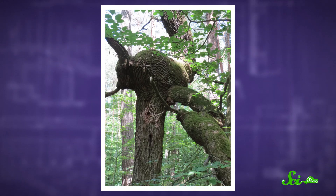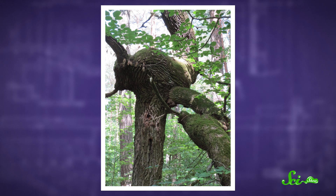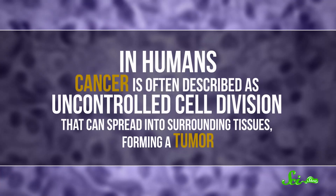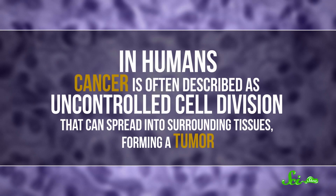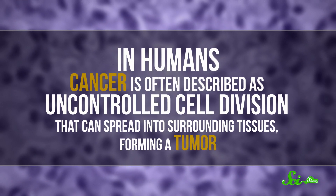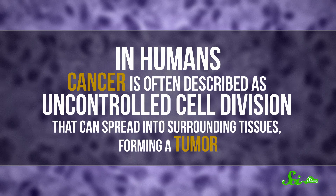You wouldn't expect to come across a plant with strep throat or pneumonia, but have you ever seen a tree with a big twisted knot growing out of it? That's plant cancer. It's not super easy to define what cancer is, but in humans, cancer is often described as uncontrolled cell division that can spread into surrounding tissues, forming a tumor.